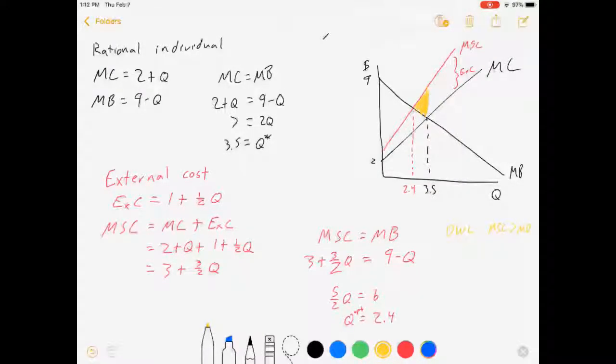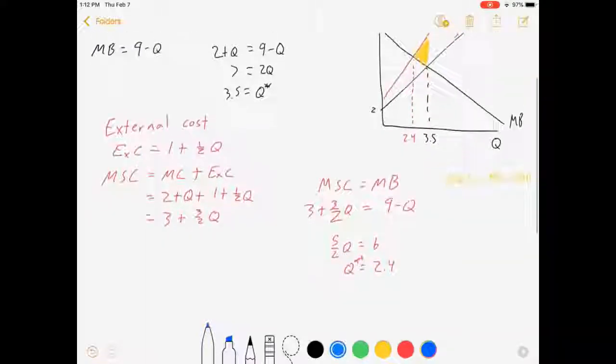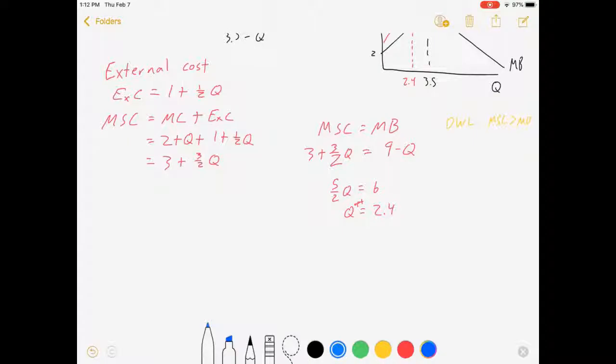Well, in this case, whenever we see a deadweight loss, that brings the question of should we intervene in the market? And if so, how? I'm going to ignore the should we question and just talk about the how. The trick with external costs is to get them to internalize it.